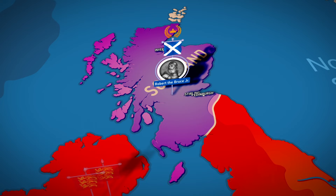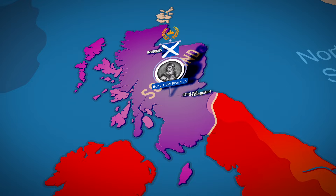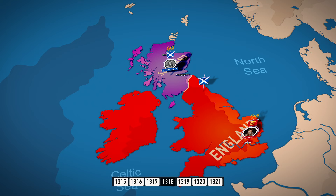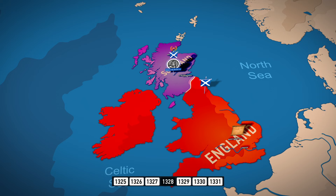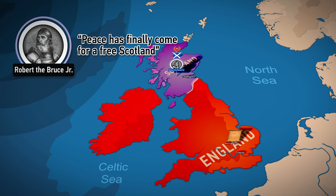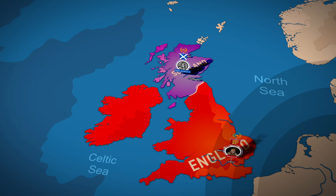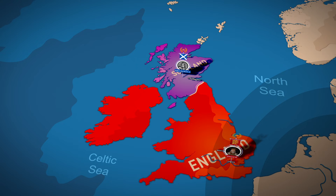Despite his brother's defeat in Ireland, Robert the Bruce achieved notable victories over the English in Lancashire and Yorkshire. After many years of unsuccessful warfare, the new king of England, Edward III, decided to recognise the independence of Scotland. In 1328, he signed the Treaty of Edinburgh-Northampton with Robert the Bruce. At the price of thousands of deaths and destruction, Scotland was able to regain its freedom. However, the new English king and the English aristocracy sought revenge, as did Scottish aristocrats who had fought on the side of England and were expelled from their homeland, making a coming English invasion of Scotland almost inevitable.